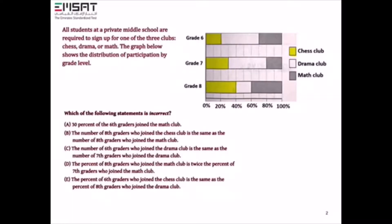All students at a private middle school are required to sign up for one of three clubs: chess, drama, or math. The graph shows the distribution of participation by grade level. The question asks which statement is incorrect. Let's go through all options. Option A states that 30% of the 6th graders joined the math club — that is correct.